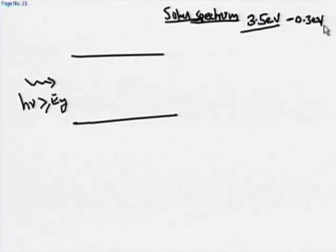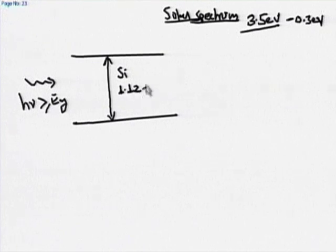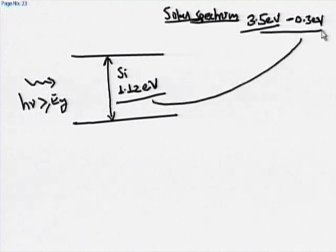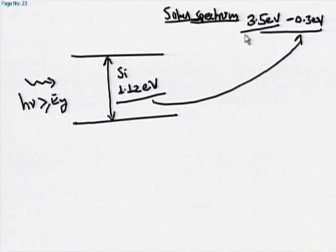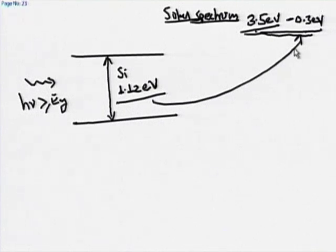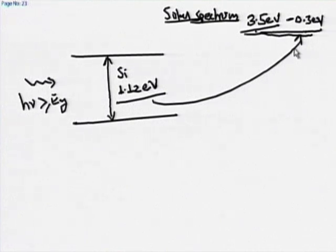The solar spectrum has photons as high as 3.5 eV (ultraviolet) and on the lower side about 0.3 eV. The band gap of silicon, commonly used material, is 1.12 eV. Since silicon's band gap is 1.12 eV and the solar spectrum ranges from 3.5 eV to 0.3 eV, not all photons in our solar spectrum are absorbed in silicon. Silicon is also transparent to infrared light, though we do not notice it because our eyes cannot see infrared.